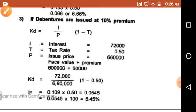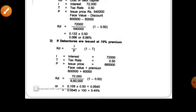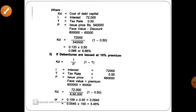I hope you are clear with this problem. So this covers the calculation of cost of debt under 3 situations: at par giving 6%, at 10% discount giving 6.66%, and at 10% premium giving 5.45%. Please try this problem yourself.